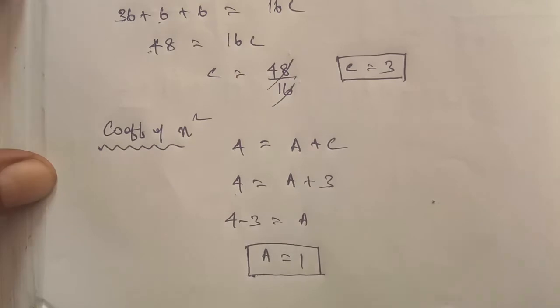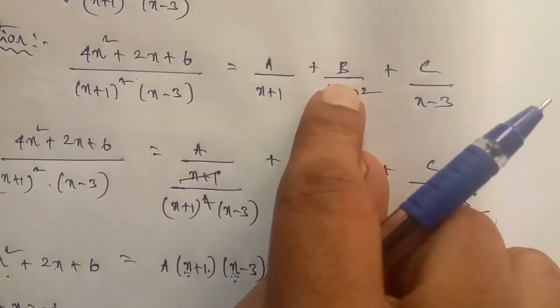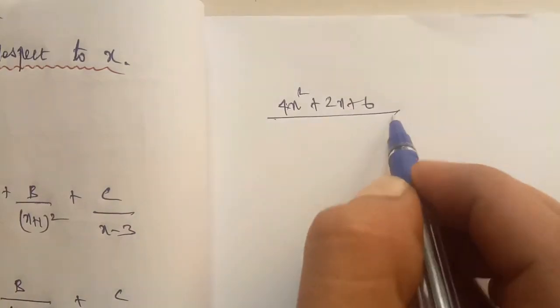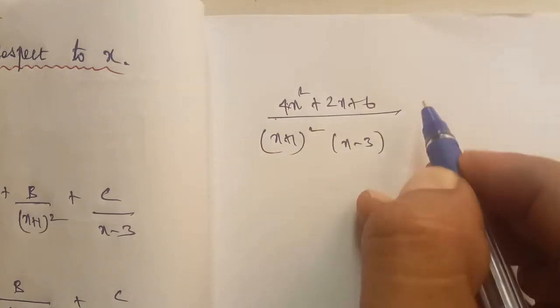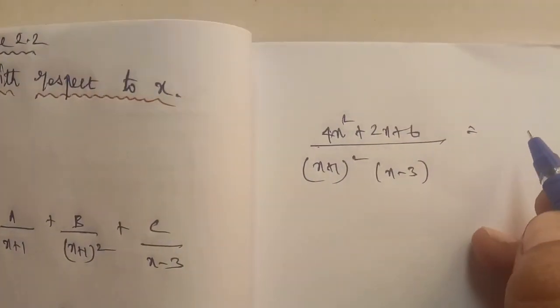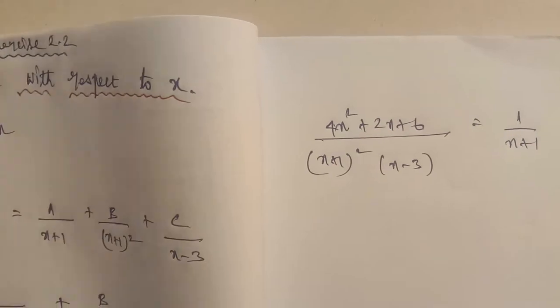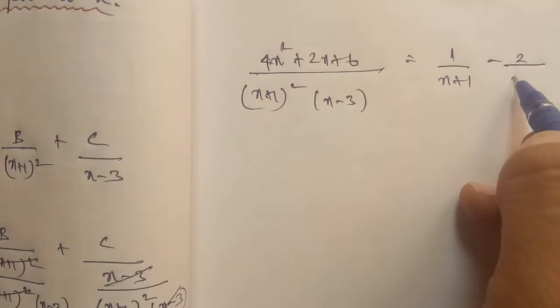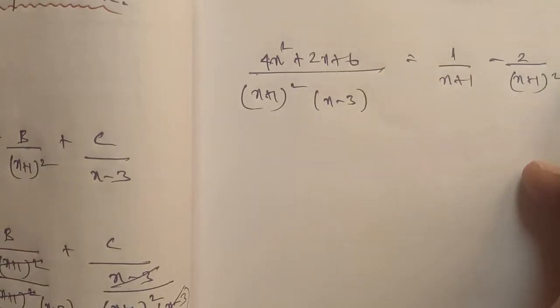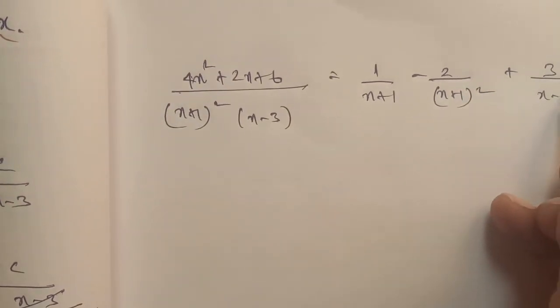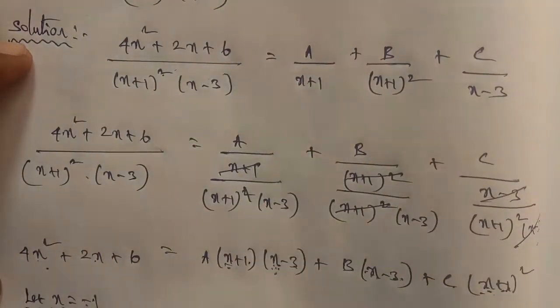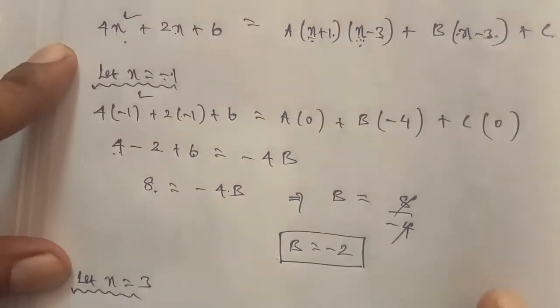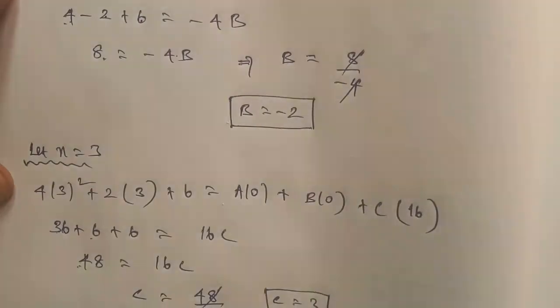Now we have all three values: A equals 1, B equals minus 2, C equals 3. Writing the partial fraction result: 4x² + 2x + 6 divided by (x+1)²(x−3) equals 1 by (x plus 1) plus minus 2 by (x plus 1) whole power squared plus 3 by (x minus 3).